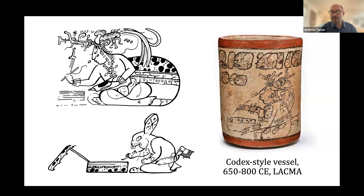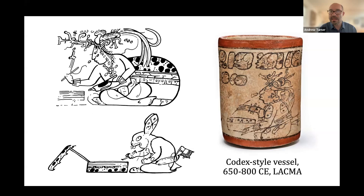We also have a style of vessels called the codex style, typically painted with orange or red rim and base, and a simply cream background with black pigment. This black and white style is really what we come to expect from a Mesoamerican codex. For the Aztecs, they had a term 'in tilli in tlapalli,' which actually meant 'the black and the red,' and those two terms together signify writing. Writing is called 'the black and the red' for the Aztecs, undoubtedly referring to this tradition of recording imagery in books.